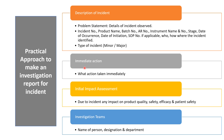The next section is immediate action — define what action was taken immediately after identifying the incident, such as placing the instrument on hold, initiating the incident, and performing a preliminary investigation. The next section is initial impact assessment — define the impact on product quality, product safety, and efficacy due to the incident. For example, if the sequence was interrupted before sample injection, there will be no impact on product quality.